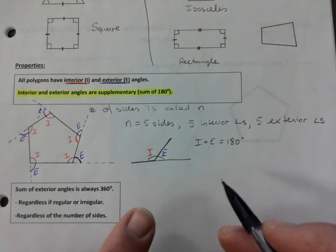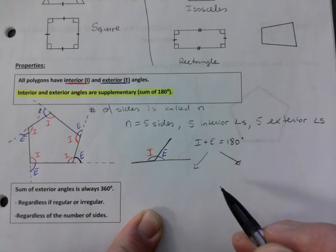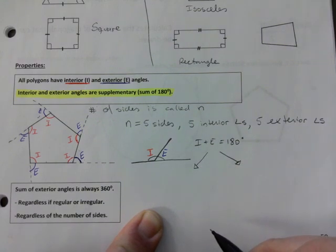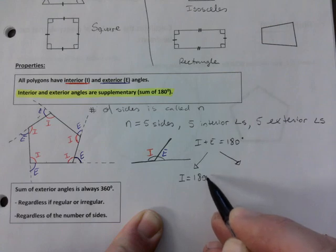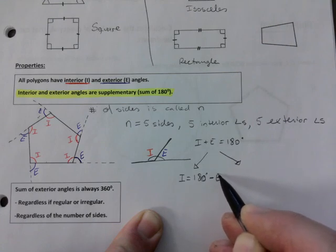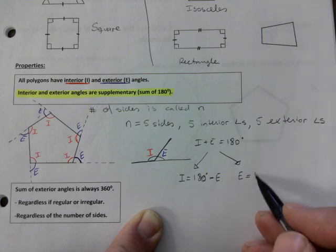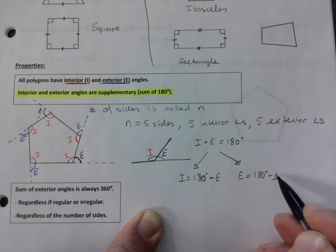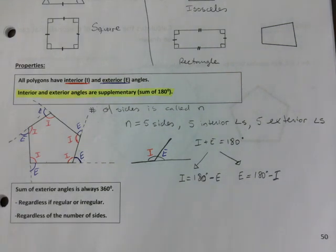I plus E is 180 degrees. And maybe I'll give you one more hint. From this, you can actually, it helps you two ways. You ready? If you want to know the interior angle, you just go 180 minus the exterior. Or if sometimes you want to know the exterior because you know the interior, you're just going to go 180 minus I. Okay? So it goes both ways.